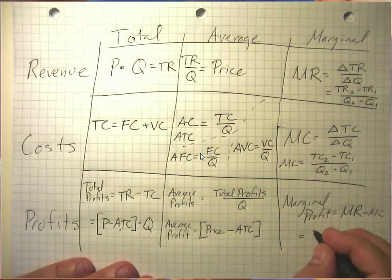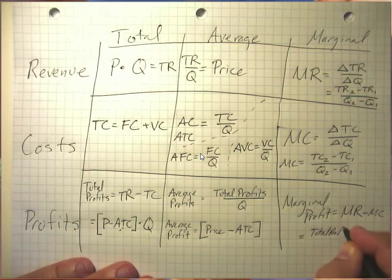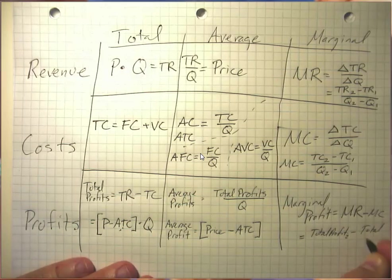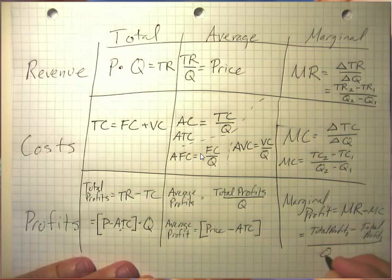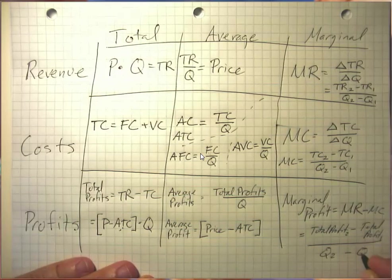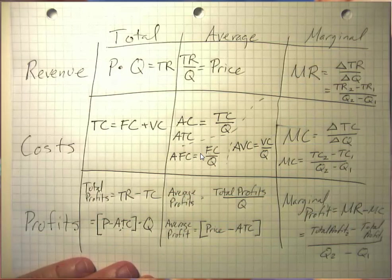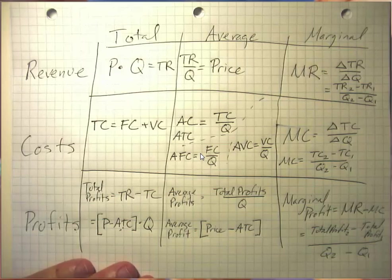It could also be total profit 2 minus total profit 1 over Q2 minus Q1. And those should give us the same results there. So I'll go ahead and pause there. And that's a useful set of formulas for you guys.